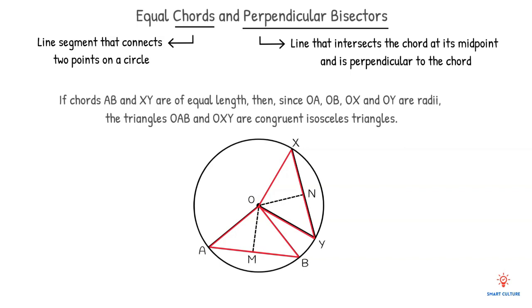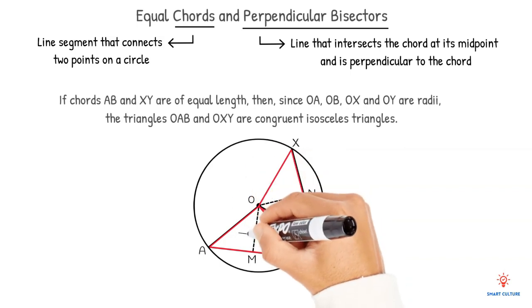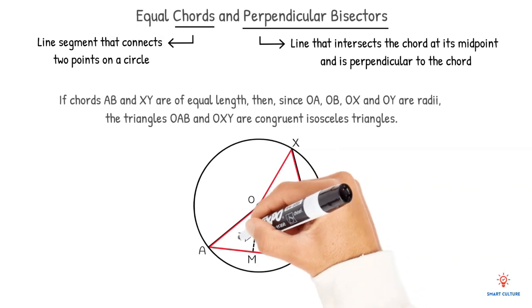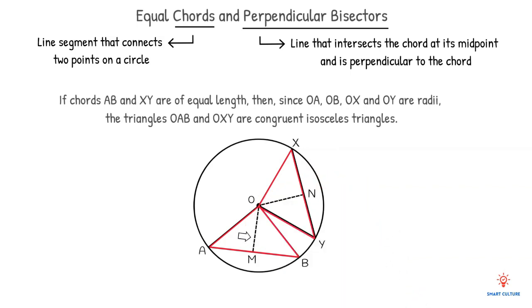At the same time, the section of a line of symmetry OM through triangle OAB is the same length as the section of a line of symmetry ON through triangle OXY. And also OM and ON are perpendicular bisectors of AB and XY respectively.